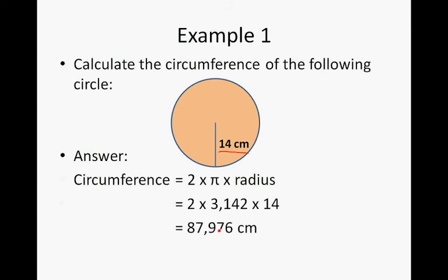And that is 87.976 centimeters. We mostly round to 2 decimals. So when we round, we can use the equal sign. This means almost equal to. So it's 87.98. The 7 will turn into an 8 because we look at the third digit when we round to 2 decimals.